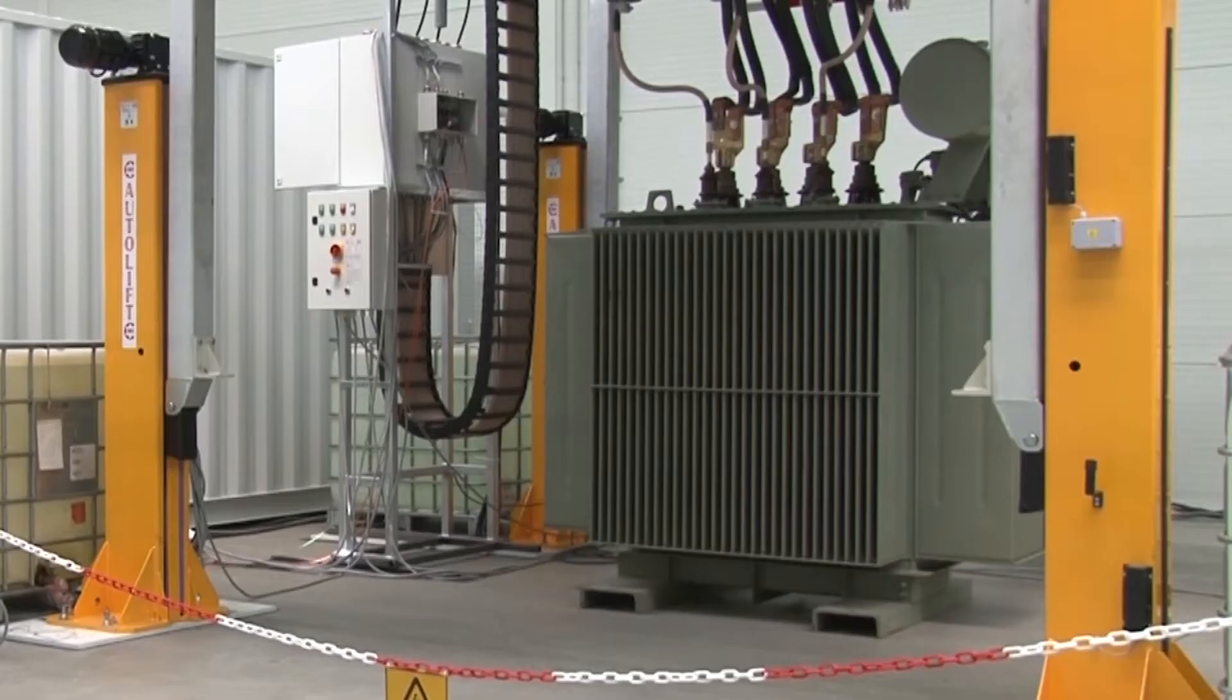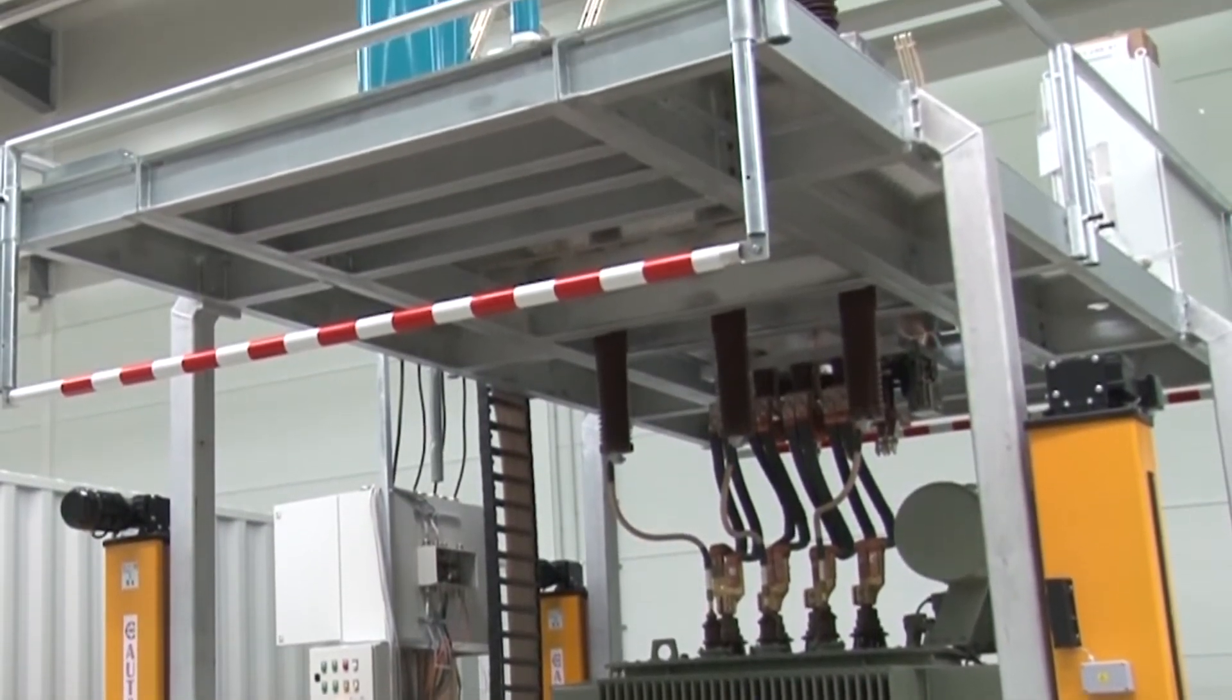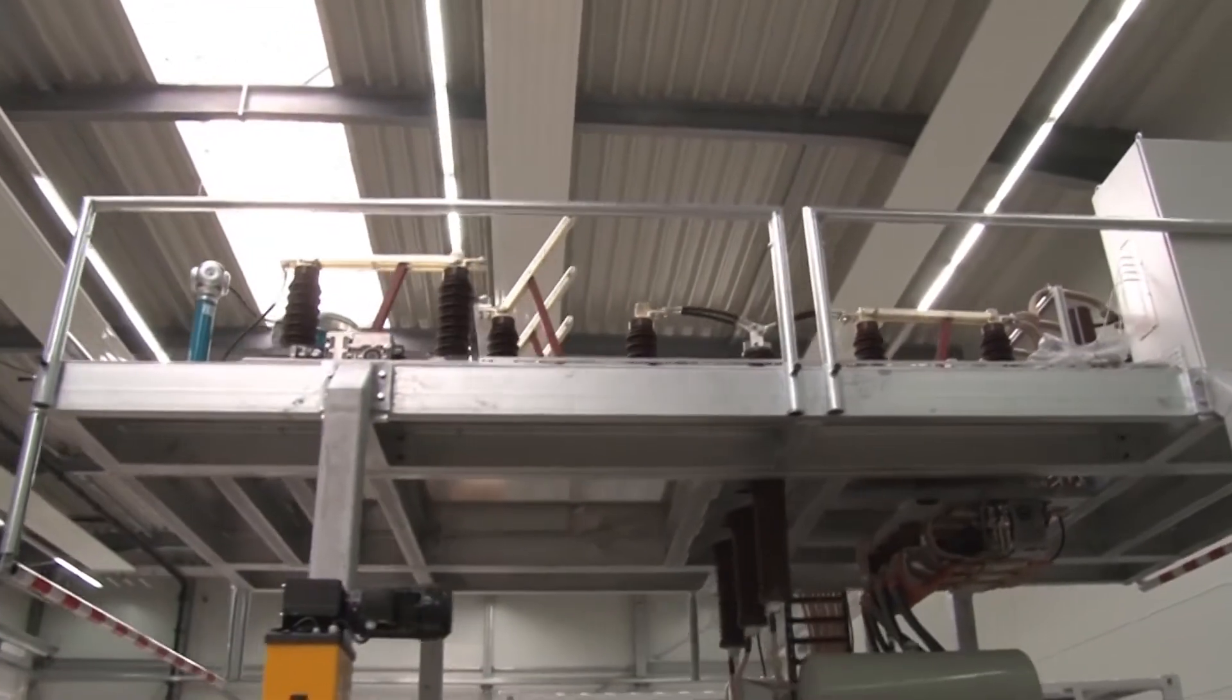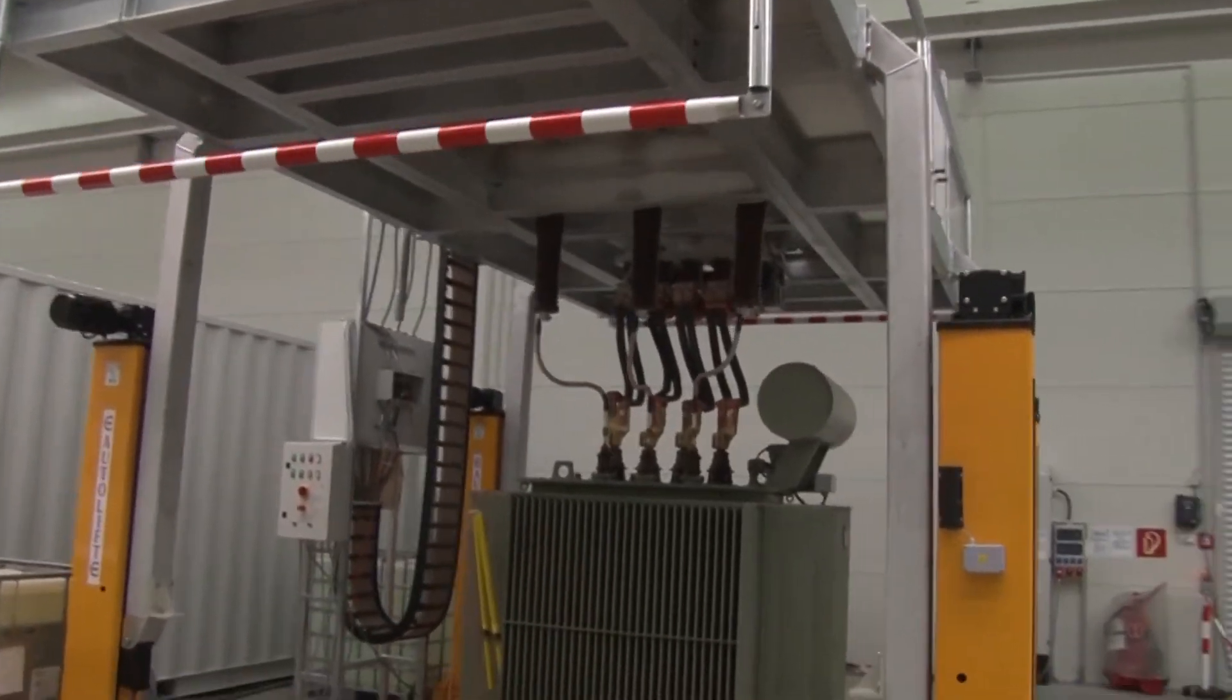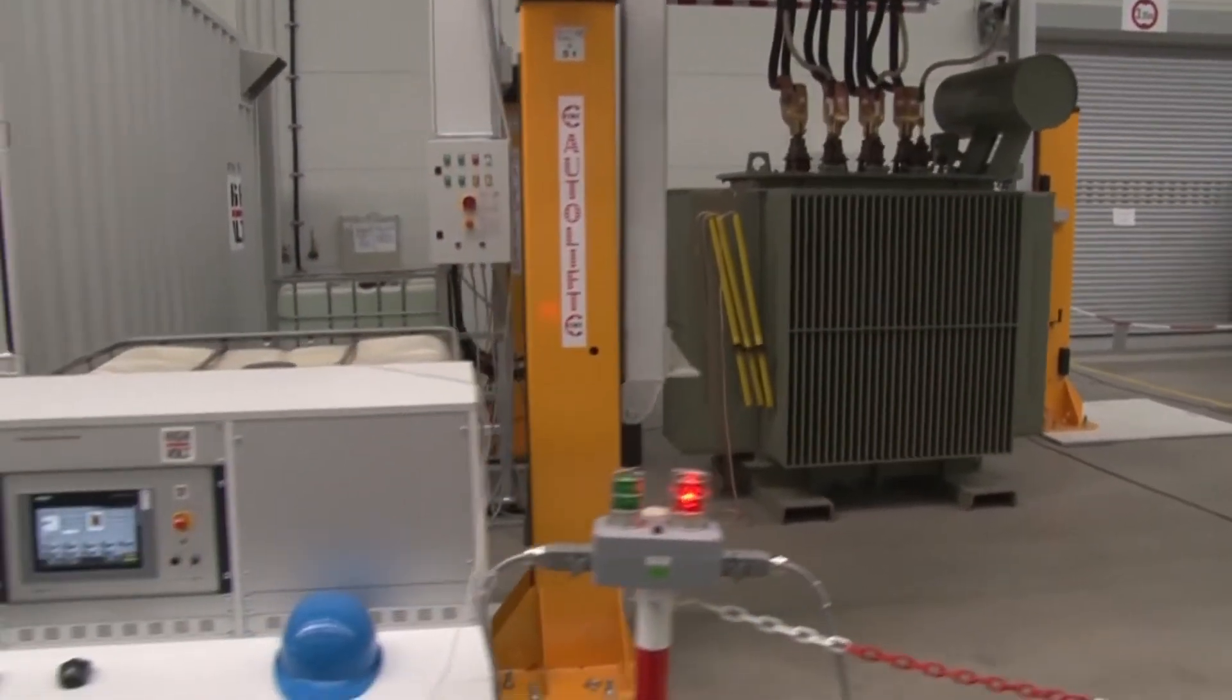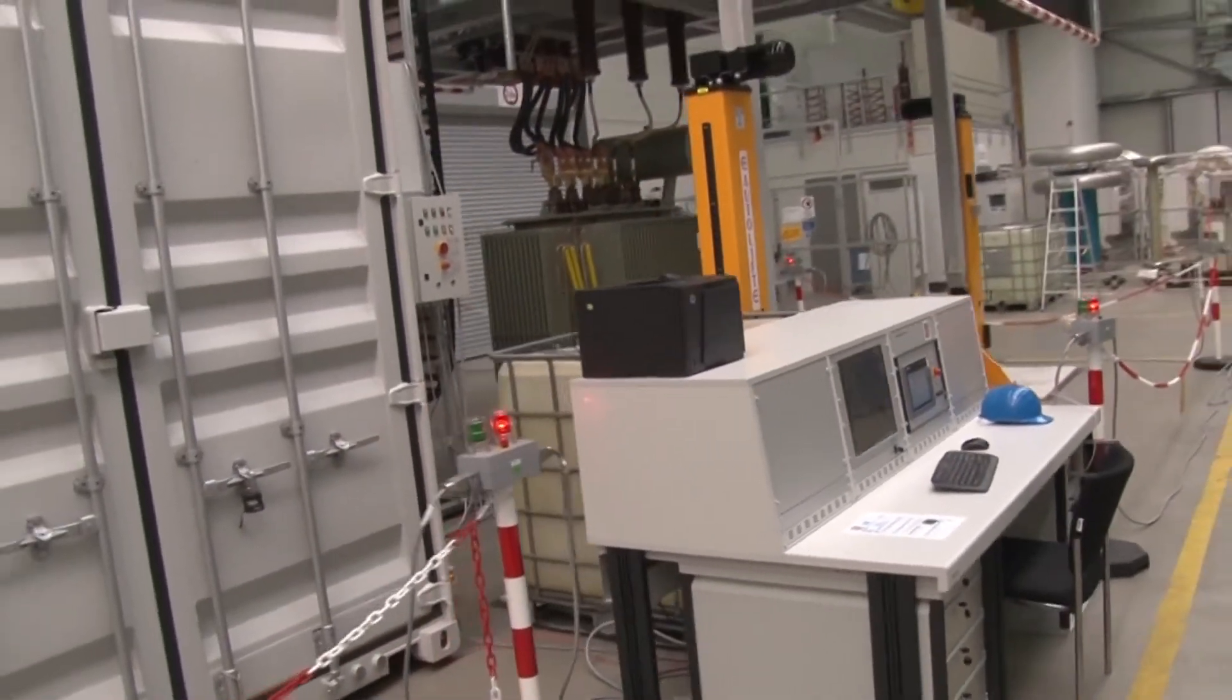DITAS can be used for both routine and type testing of distribution transformers up to five megavolt ampere. DITAS is fast. To be able to integrate high voltage tests into the current production process, our DITAS test system can be operated in a fully automated mode. As a result, a complete routine test takes only a few minutes.